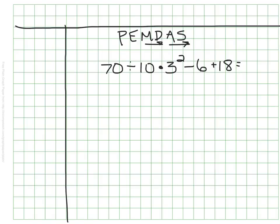So the first thing I notice is that I don't see any parentheses, so I'm going to skip that, but I do see an exponent. Right here, I see 3 squared. And remember, 3 squared is 3 times 3, so I get 9. From there, I'm going to rewrite what is left to do.